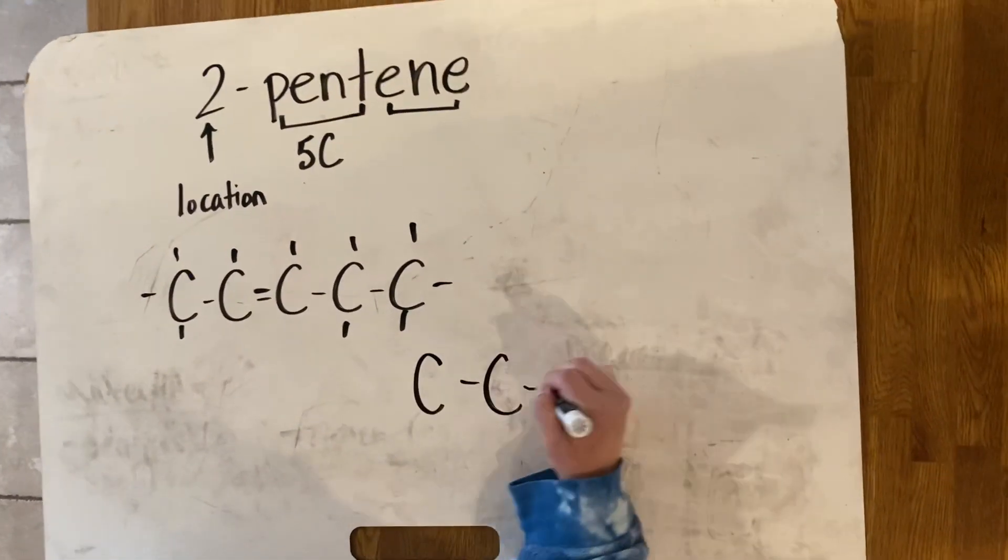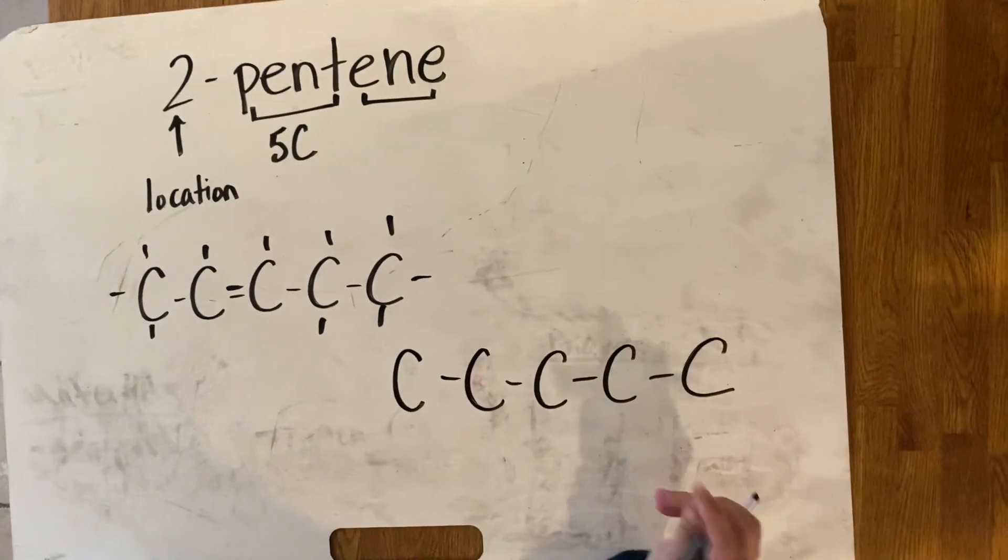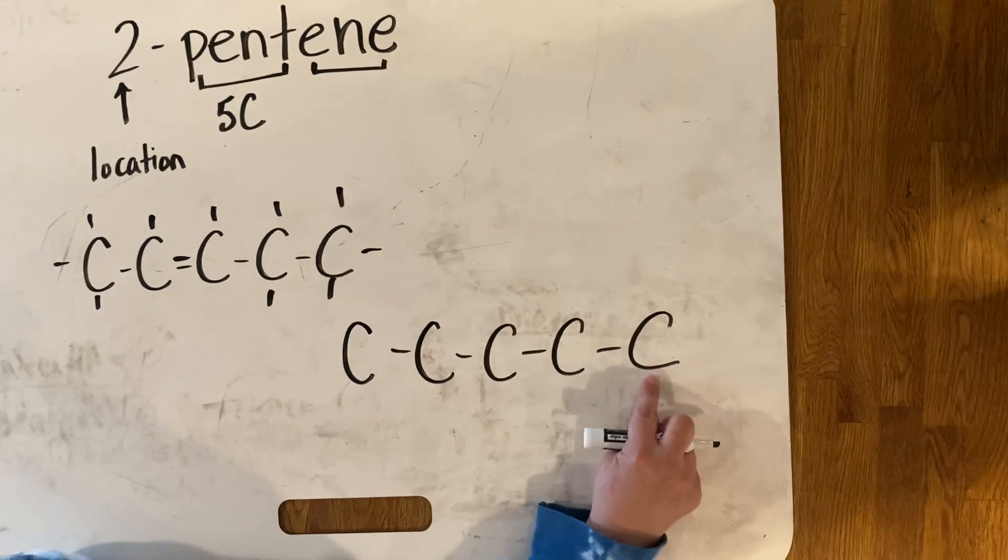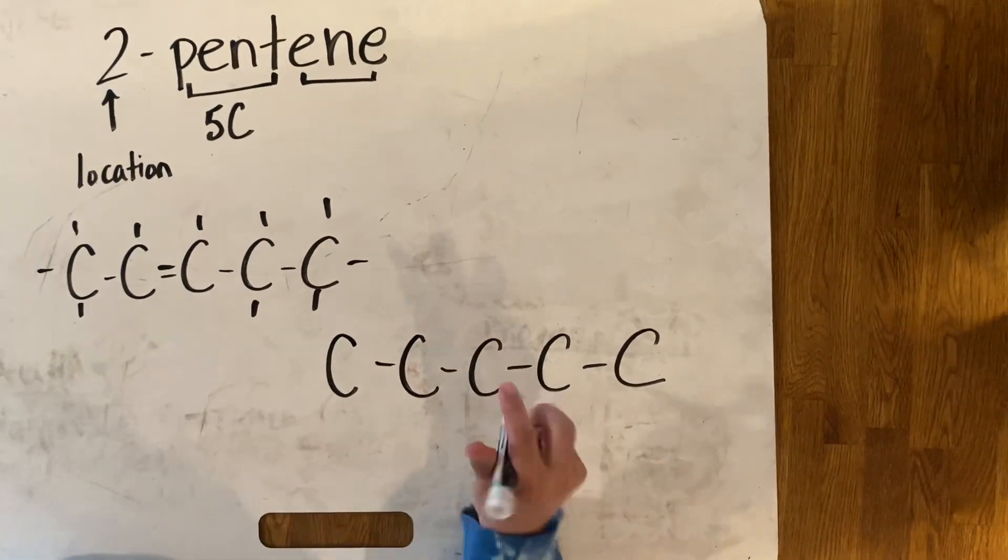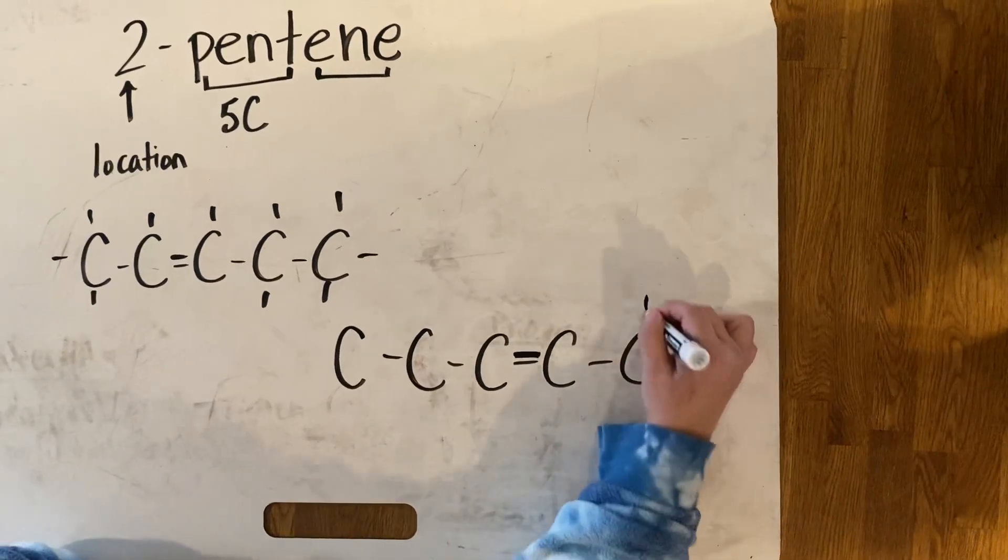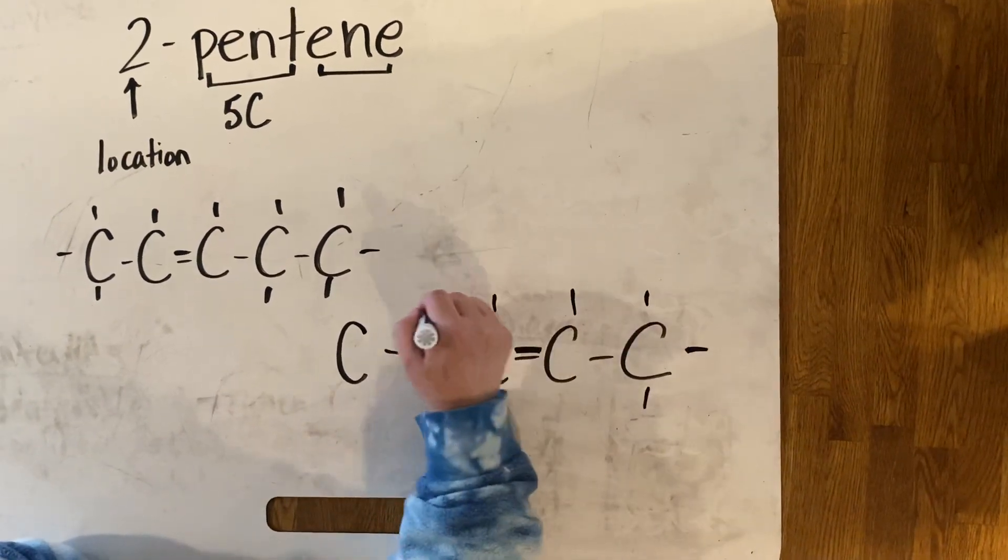If you instead put your five carbons in, you just like to call this carbon number one. You can. This would be carbon number one. This would be carbon number two. And your double bond would be here. And you'd still add all those H's in like we did before.